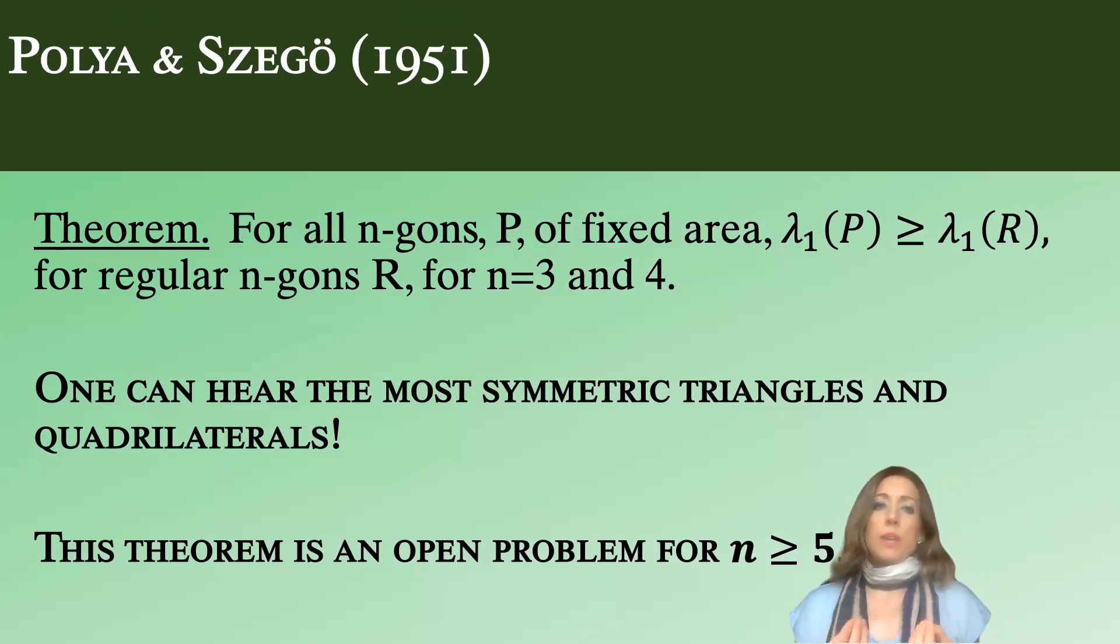Both the Polya Szego and Faber-Cron results were proven by symmetrization methods. And the method here is called Steiner symmetrization, and it stops sort of working for n greater than or equal to 5.